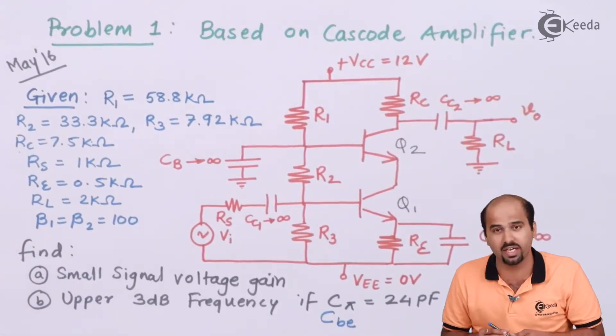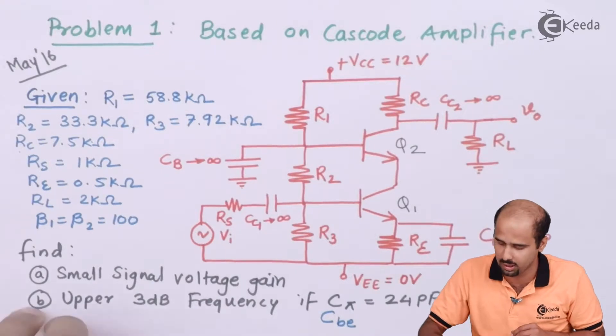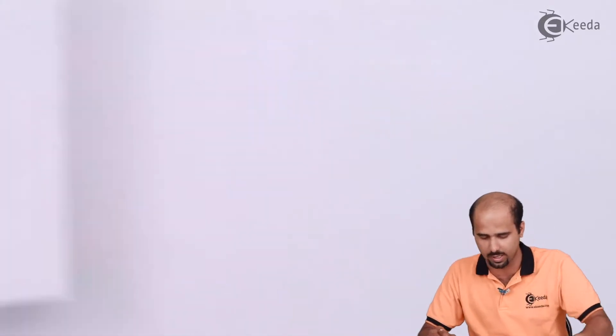Now we are familiar with how to find the higher cutoff frequency. Cπ is CBE and Cμ is CBC. Let's move to finding all these numerical values. The first step is DC analysis. The voltage gain depends on Gm and Gm depends on the DC analysis.